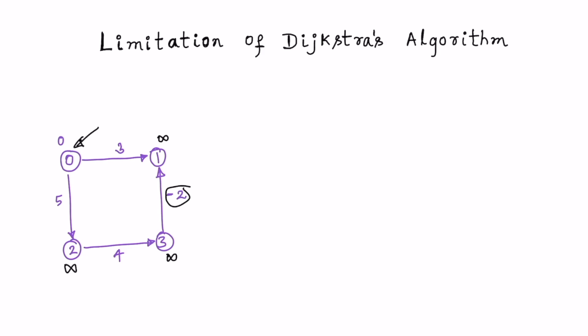Next we look at the neighbors of node 0, which are 1 and 2, and we pick the neighbor that is closest — in this case node 1 — and change the distance to node 1 as 3 and mark it as visited. The next closest node is node 2 at distance 5, so we change the distance to 5 and mark node 2 as visited.